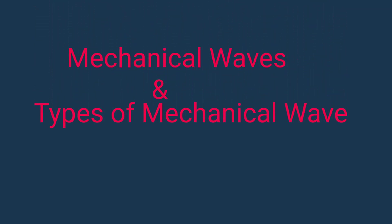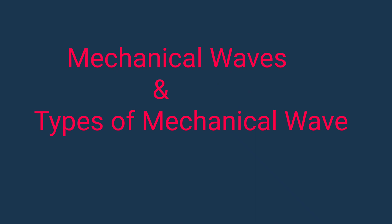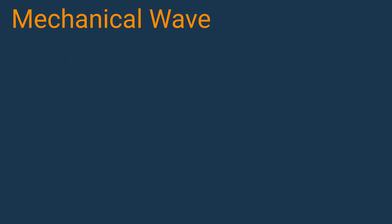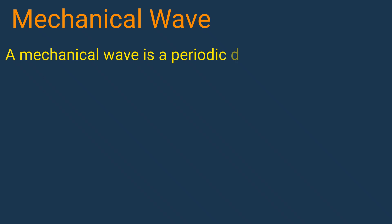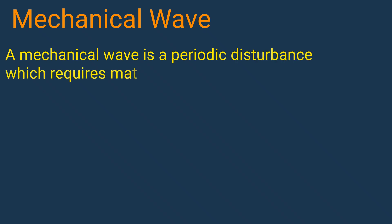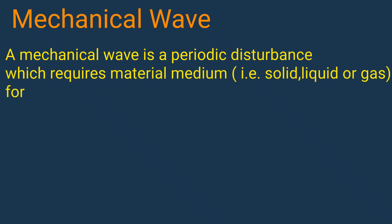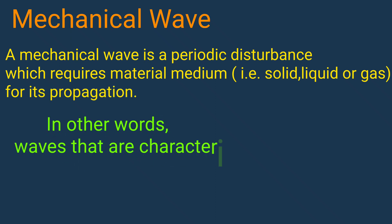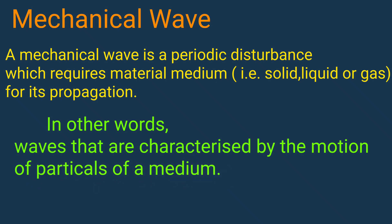Welcome to my channel. In this video we discuss mechanical waves and types of mechanical waves. A mechanical wave is a periodic disturbance which requires a material medium — that is solid, liquid, or gas — for its propagation. In other words, waves are characterized by the motion of particles of a medium.